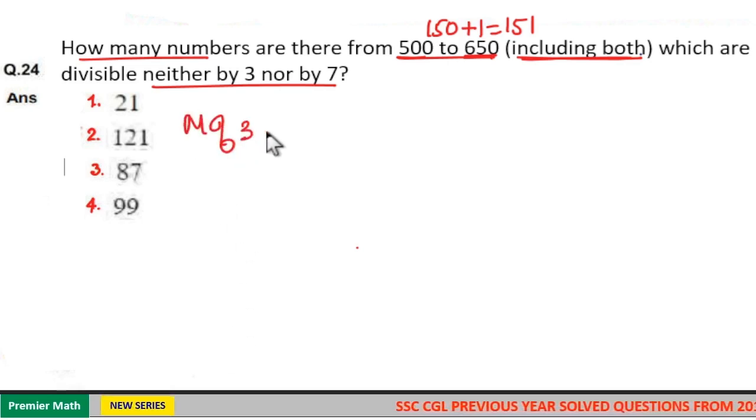Now, multiples of 3 between 500 to 650: the difference is 150. 150 divided by 3 equals 50 numbers.